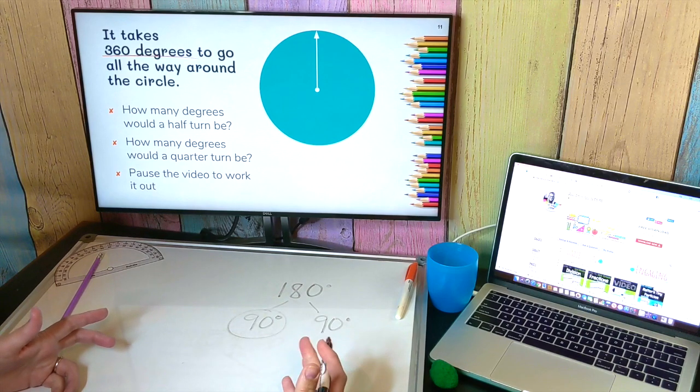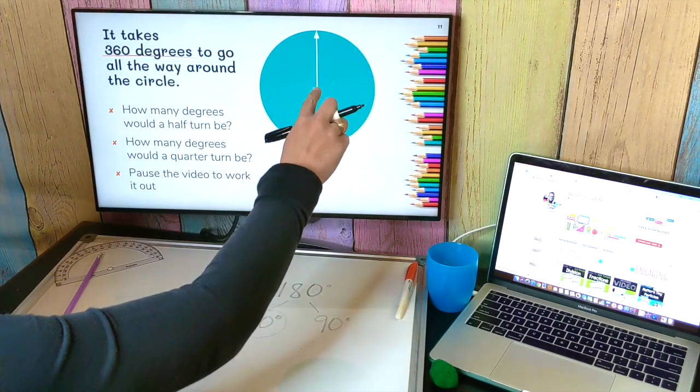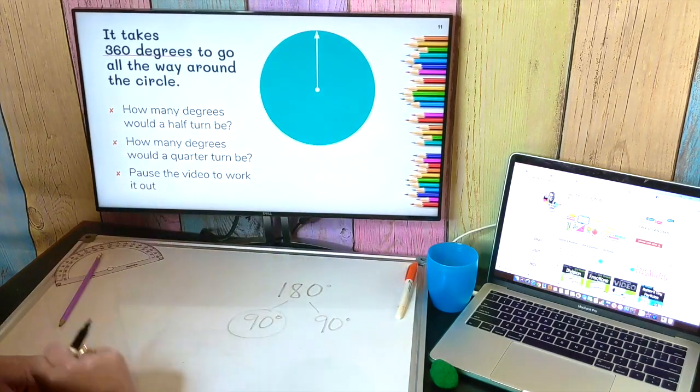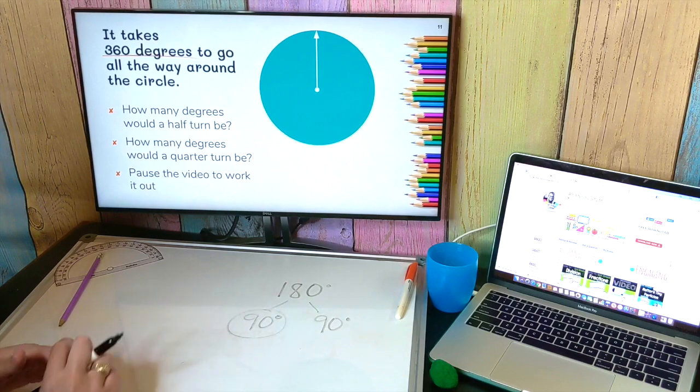Another way you could have done it is you could have taken the full 360 and divided it into four equal parts to find what one quarter turn would be. Either way would work and would still get you to 90 degrees.